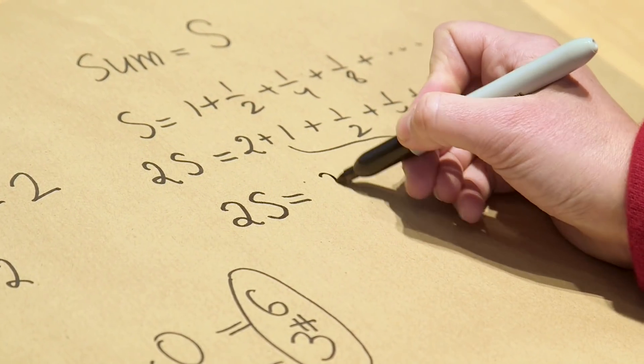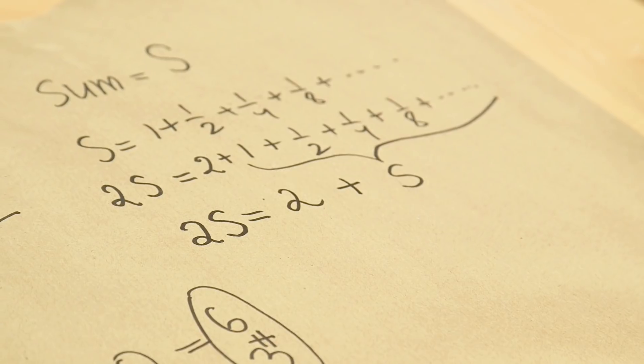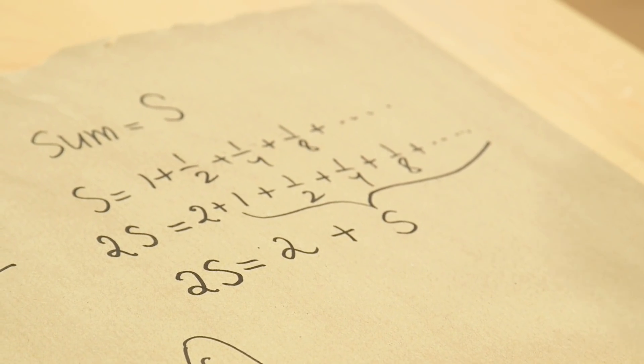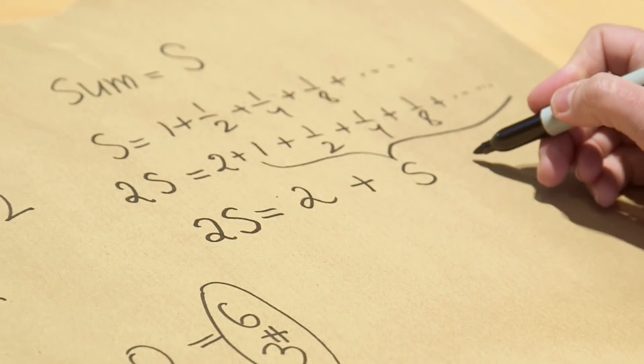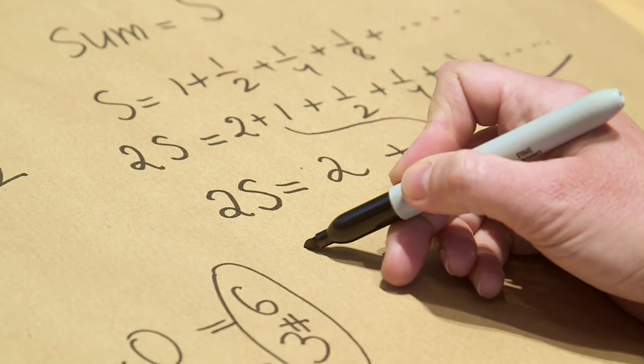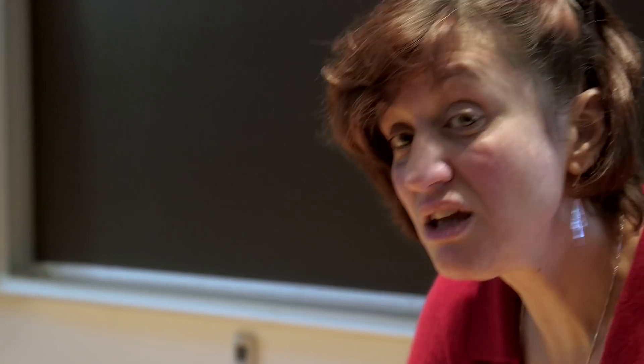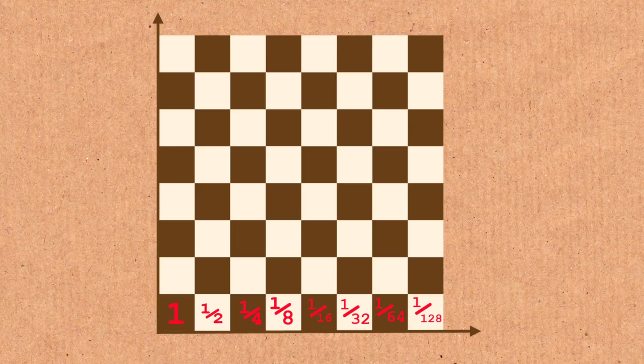So what we have obtained is what mathematicians love working with an equation. Two s on the left, two plus s on the right. Can we solve it? Certainly. We will subtract s from both sides and we will end up on the left with s and on the right with two. Oops. Did we reach two? Indeed we did. So if this row adds up to anything, there is no choice. It has got to be two.